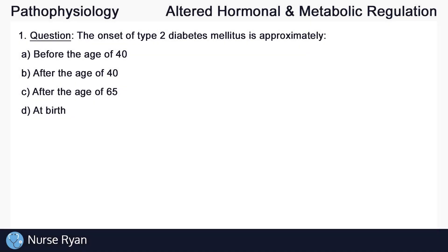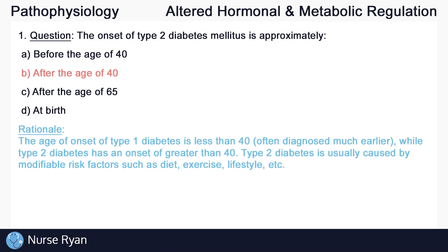Starting off with question number one: the onset of type 2 diabetes is approximately blank. For each question, I'll leave a bit of a break where you can pause the video and think about the answer. The answer here is B, after the age of 40. The age of onset of type 1 diabetes is less than 40, often diagnosed much earlier in life, while type 2 diabetes has an onset of greater than 40.